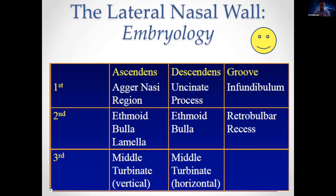Back to embryology: it's only the first and second ethmoturbinals where the pars ascendens and pars descendens persist as separate anatomical structures. The first ethmoturbinal's pars ascendens forms the agger nasi region; the pars descendens is the uncinate process. The infundibulum forms from the first ethmoturbinal groove. The second ethmoturbinal forms the ethmoid bulla and bulla lamella, and its groove forms the retrobullar recess.